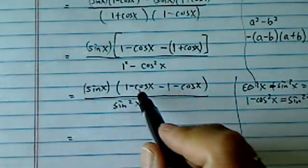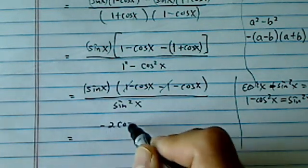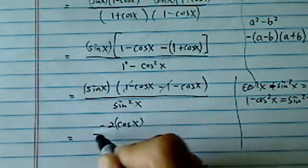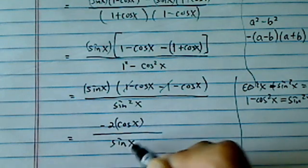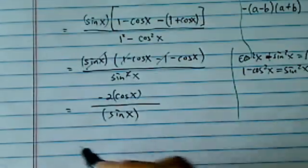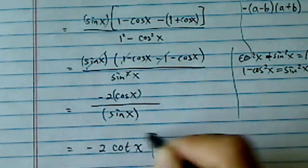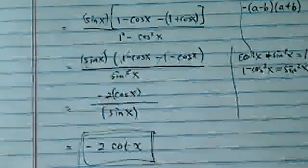And then let's clean up here. Minus 1 cancels, so minus 2 cosine x on top, and sine x on the bottom. This one cancels one of them. So the final answer is minus 2 cotangent of x. That's the final answer.